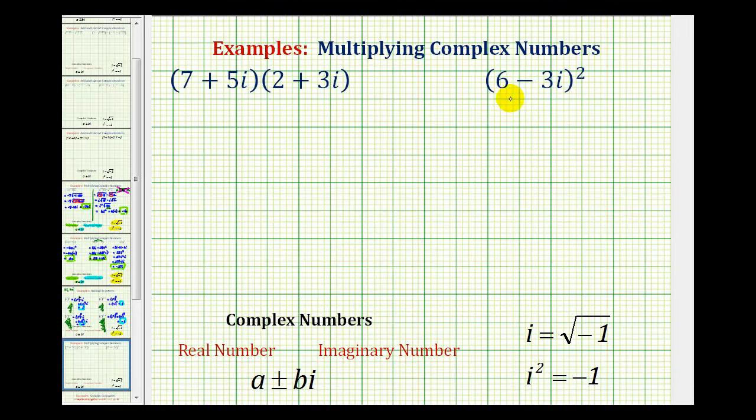We want to multiply the given complex numbers. To do this, we'll multiply them algebraically like we normally would when multiplying binomials. But then we need to make sure their product is in the form of a complex number, or in the form a plus or minus bi, where a is a real number, and plus or minus bi is an imaginary number, with i equal to the square root of negative one.